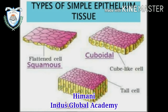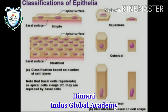Simple epithelial tissue is divided into three main types: squamous epithelium, which is flat and tile-patterned in shape; cuboidal epithelium, which is cube-like; and columnar epithelium, where cells are tall. To summarize classification: based on the number of cell layers, there are two types — simple and stratified epithelia. Based on cell shape, there are three types — squamous, cuboidal, and columnar epithelia.